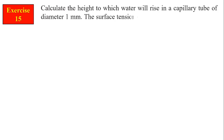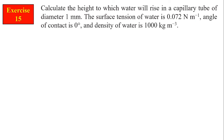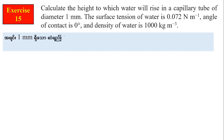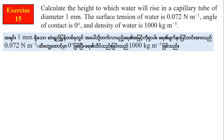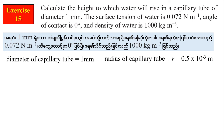Calculate the height to which water will rise in a capillary tube of diameter 1 mm. The surface tension of water is 0.072 N/m, the angle of contact is 0 degrees, and the density of water is 1000 kg per cubic meter.